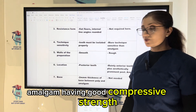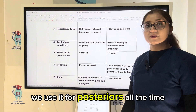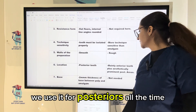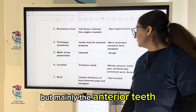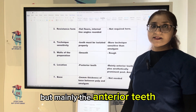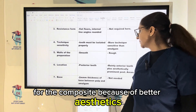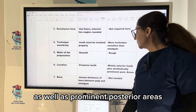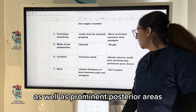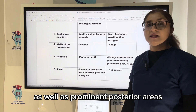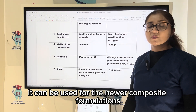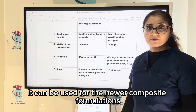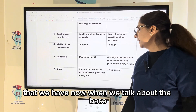Amalgam has good compressive strength and we use it for posteriors all the time. Composite is used mainly for its better aesthetics, and with newer composite formulations it can also be used for prominent posterior areas.